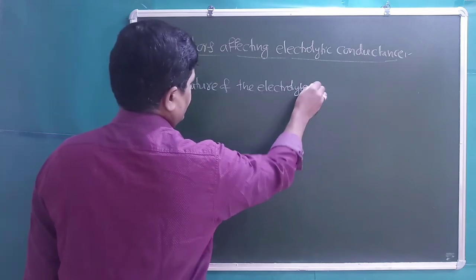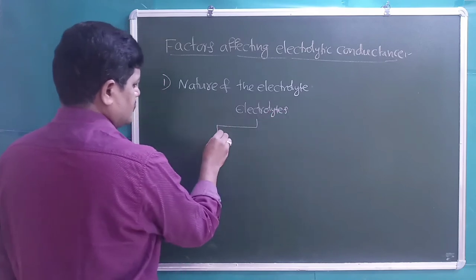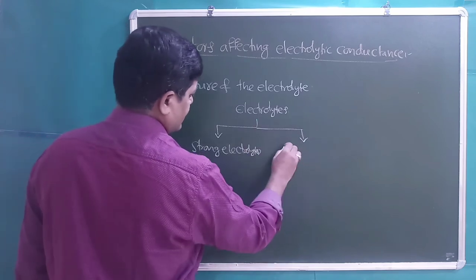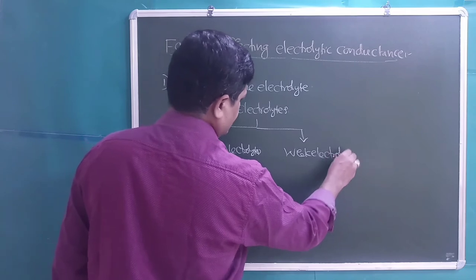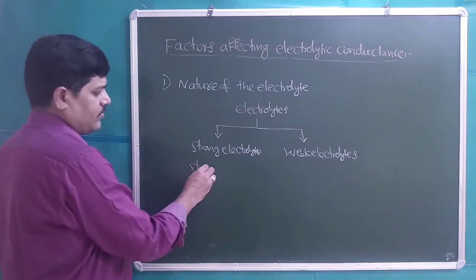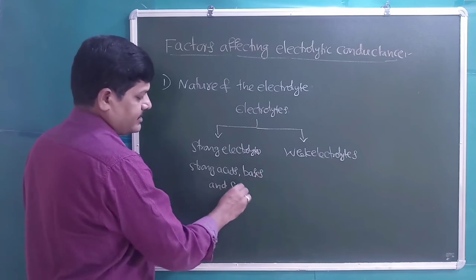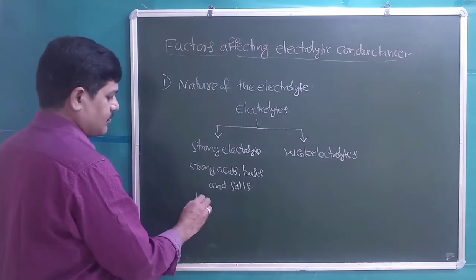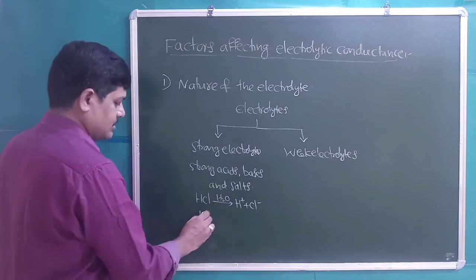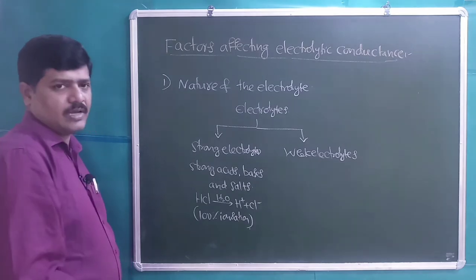Based on the extent of ionization, electrolytes are classified into two types: strong electrolytes and weak electrolytes. Strong electrolytes include strong acids, strong bases, and generally all salts. For example, HCl in water exists only in ionic form — these substances undergo 100% ionization in aqueous solution.